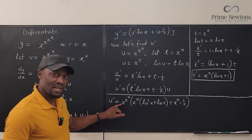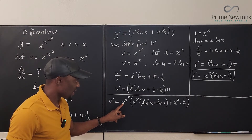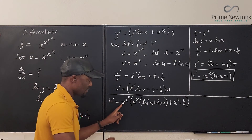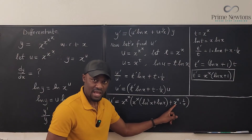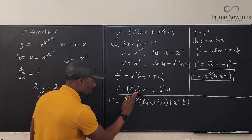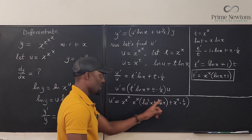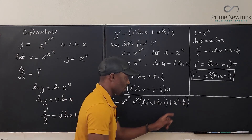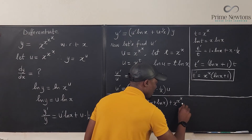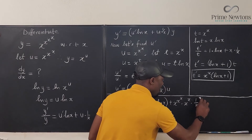I want to distribute u across both terms to avoid confusion. Multiplying out, I get: u' = x^(x^x) · x^x · (ln²x + ln x) plus x^(x^x) · x^x · (1/x). This is our complete expression for u'.